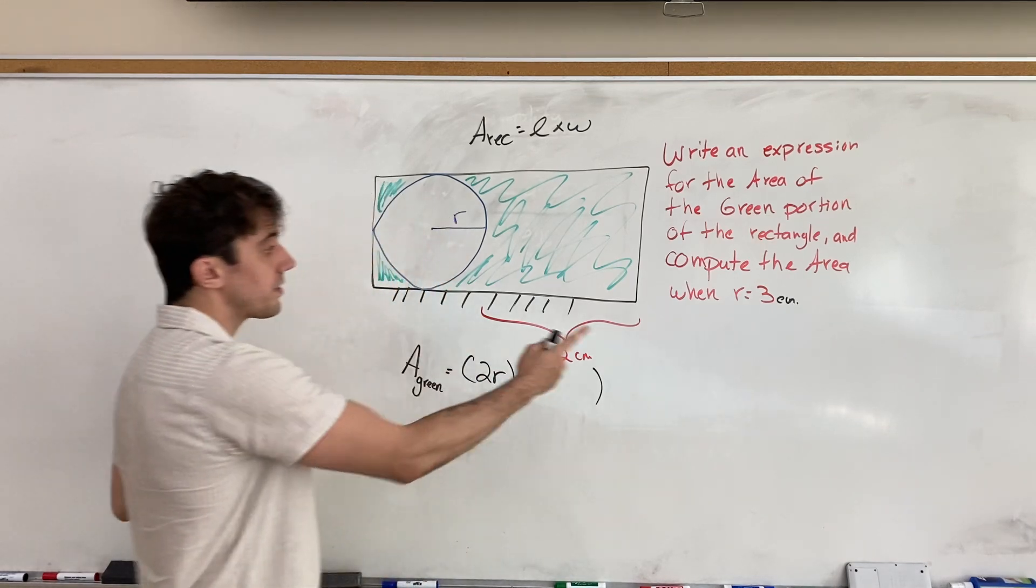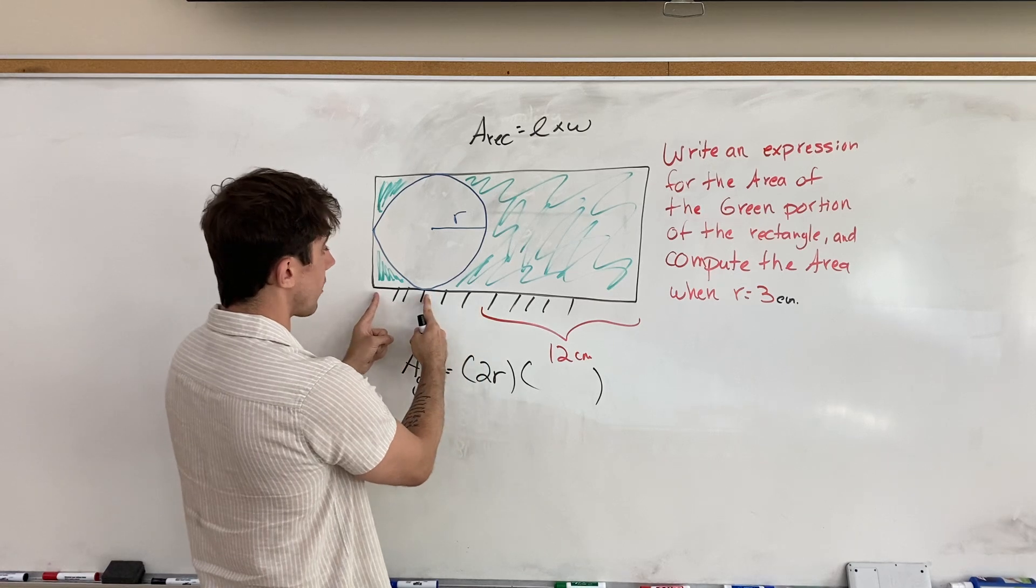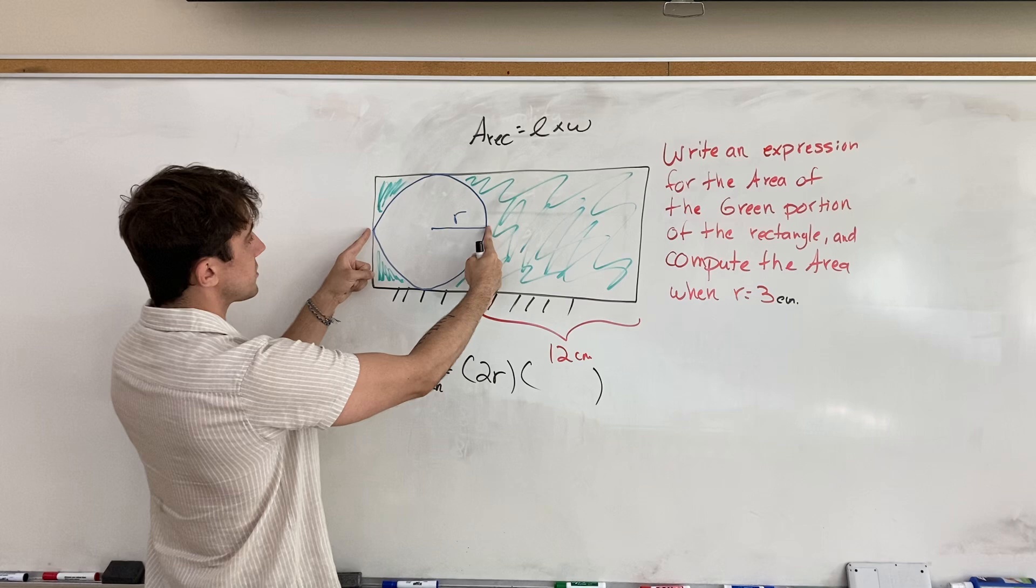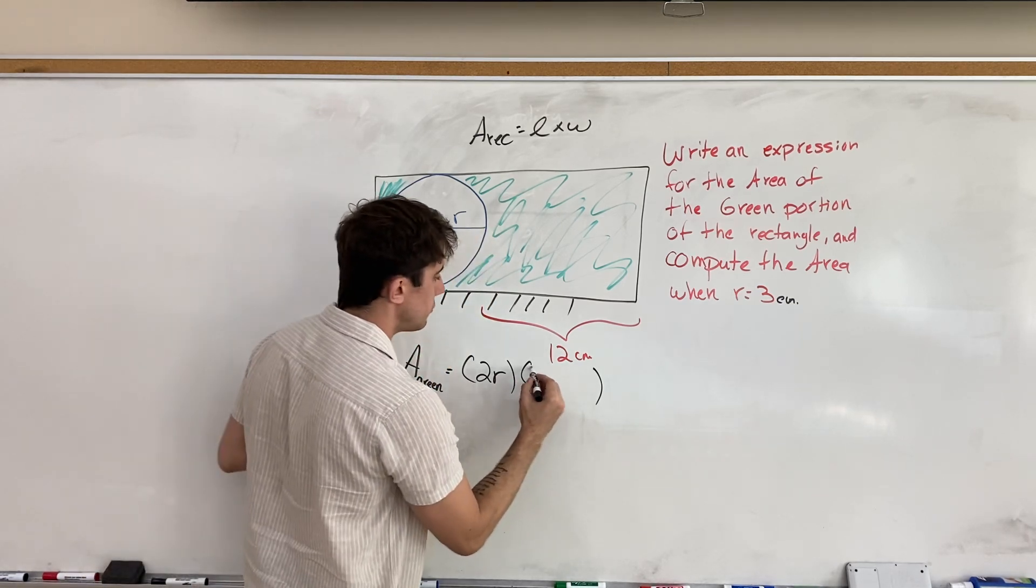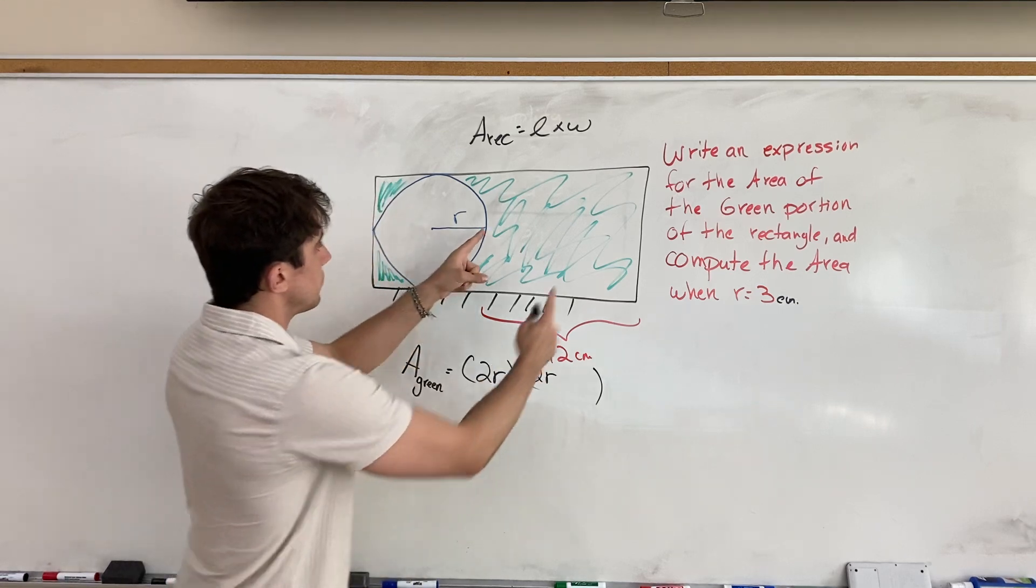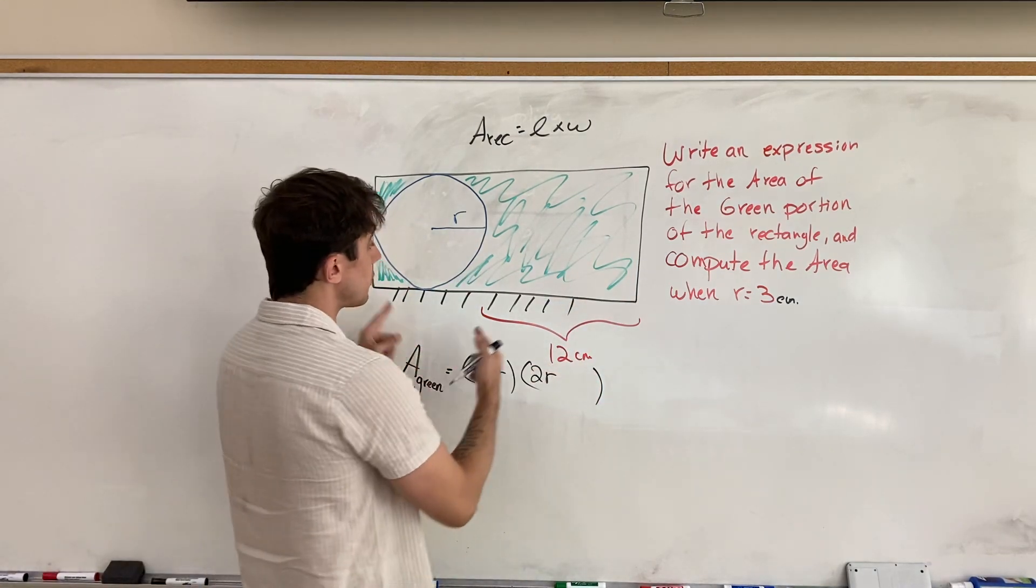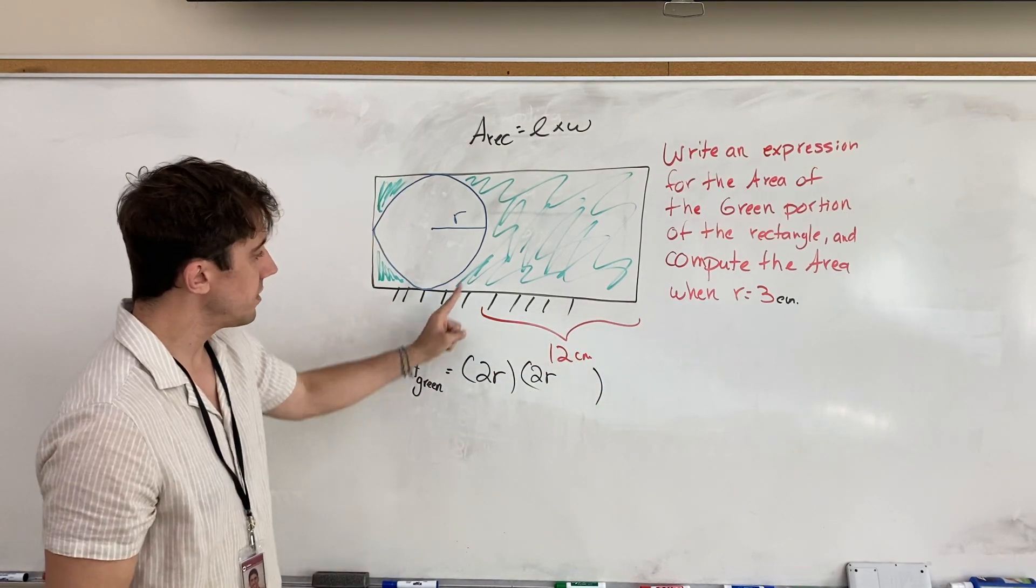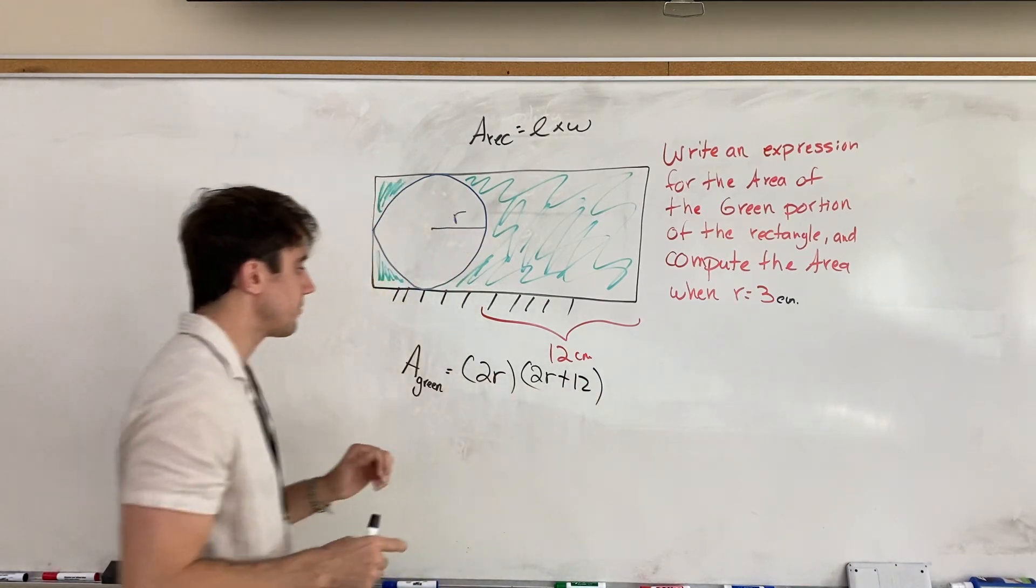Times, and now the width of the rectangle is going to be r and another r. So again, 2r, because the diameter of this circle is going to be two times the radius, so 2r. And we have this portion, which we're given to be 12 centimeters. So altogether, the length of our rectangle is going to be two radii plus the 12 centimeters. So 2r plus 12.